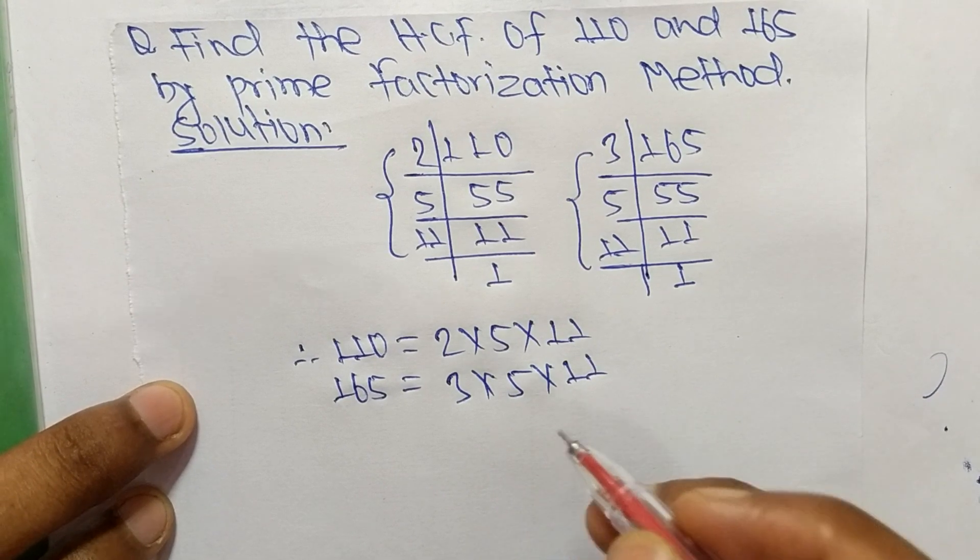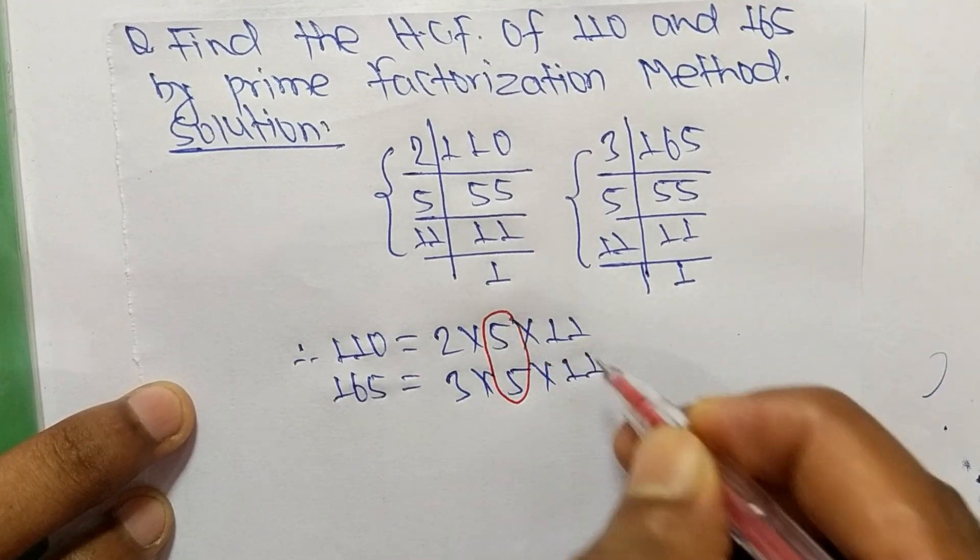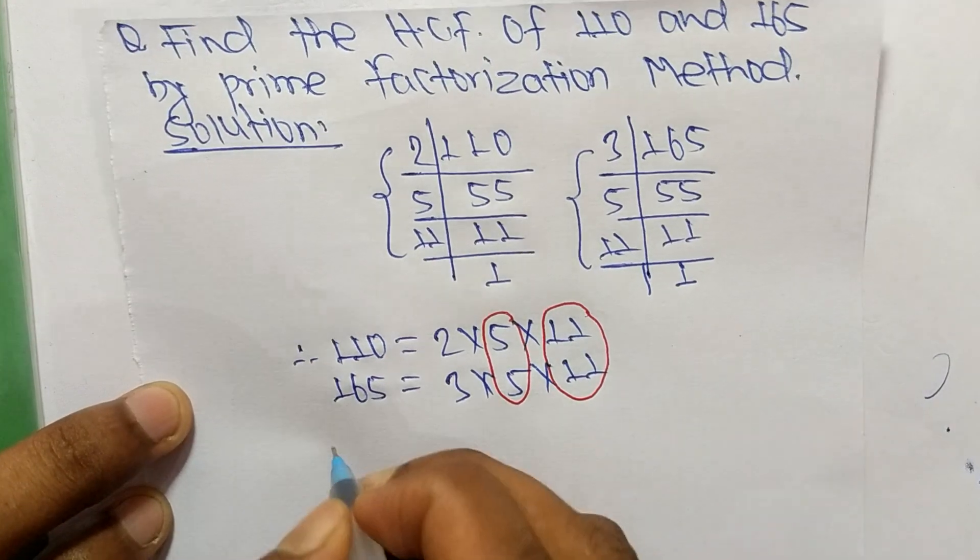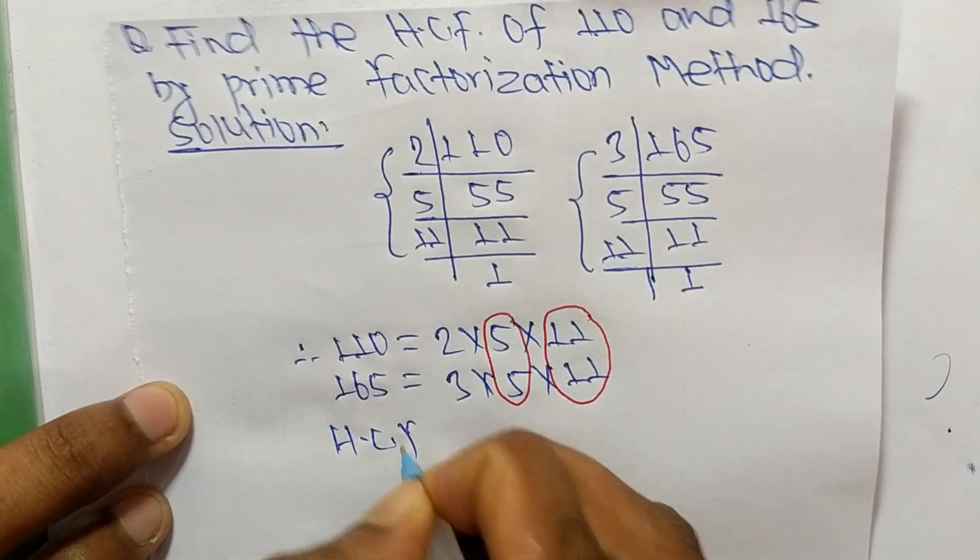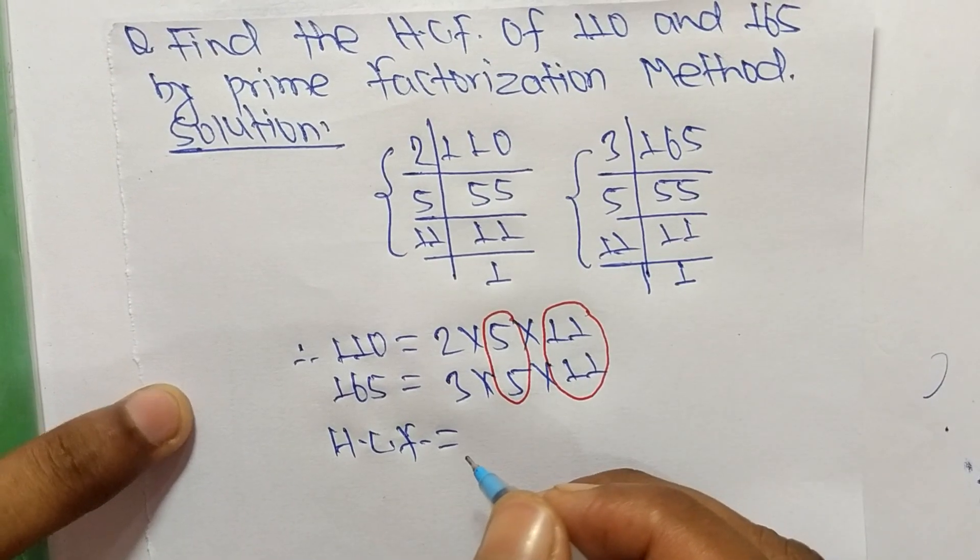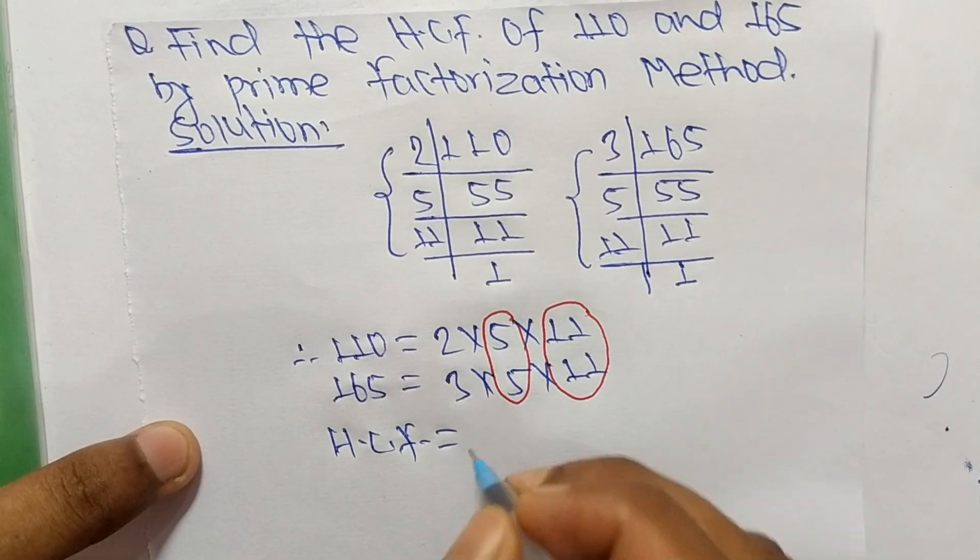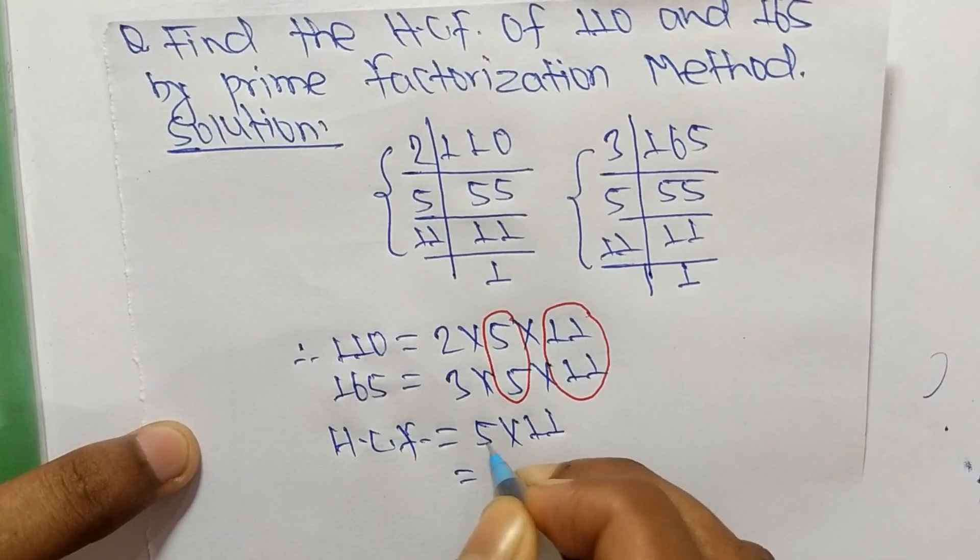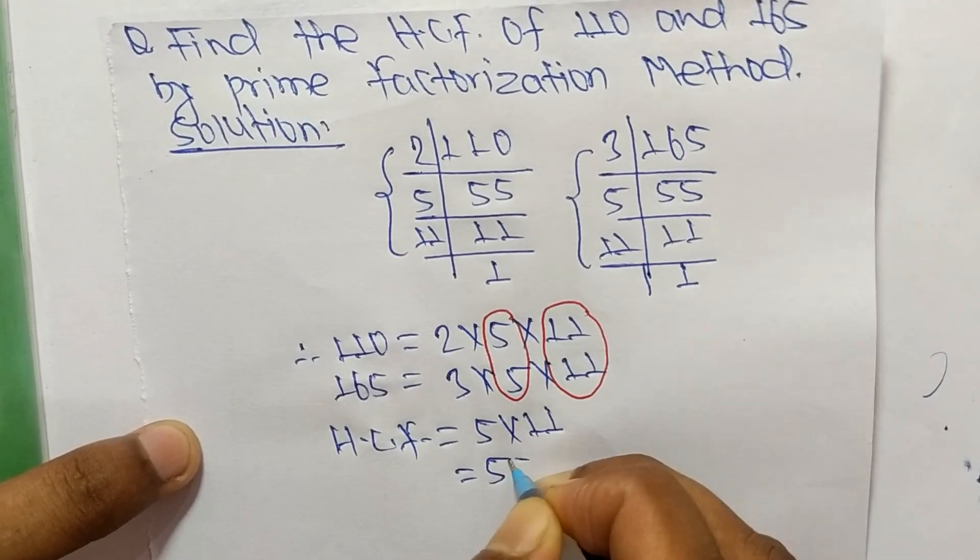The common factors are 5 and 11. The HCF is equal to the product of common factors. We have 5 and 11, so 5 times 11 equals 55.